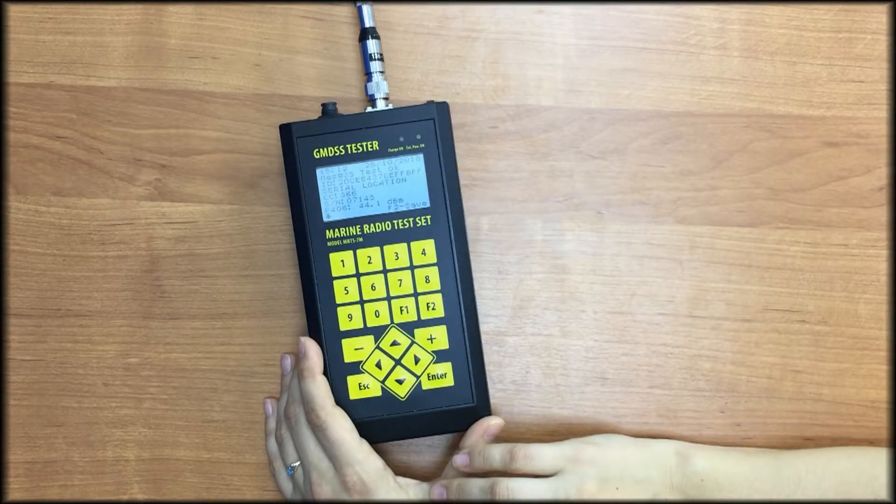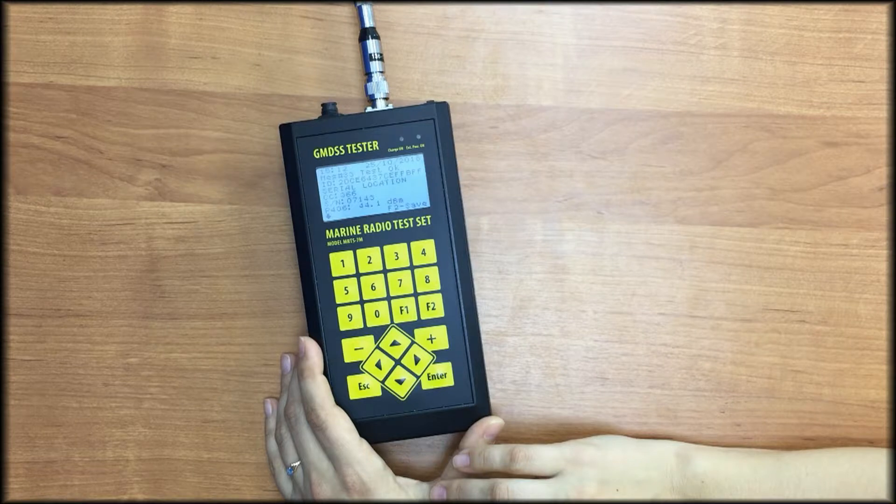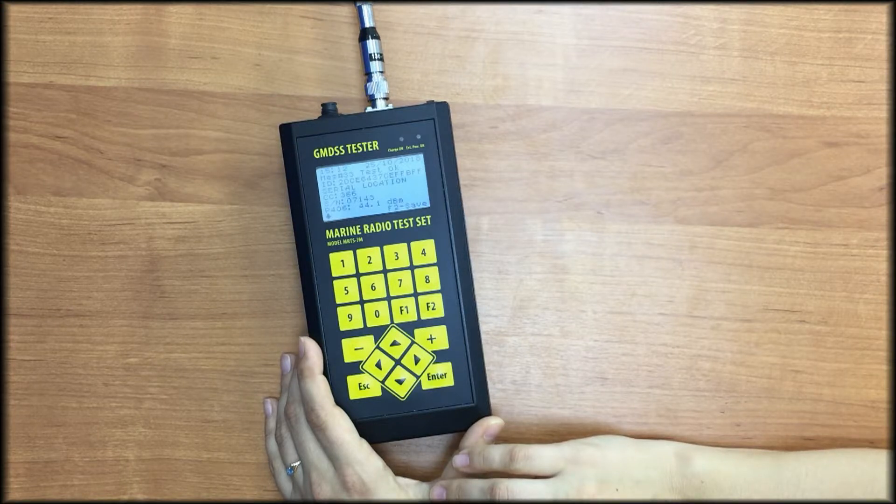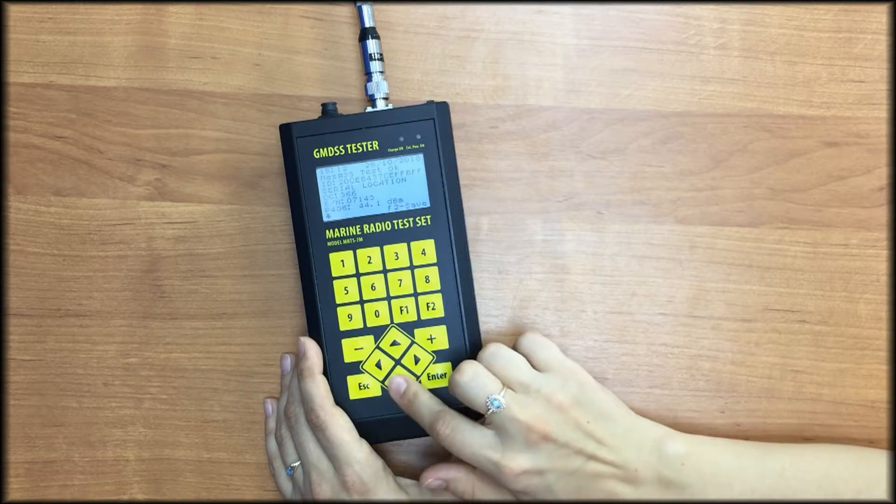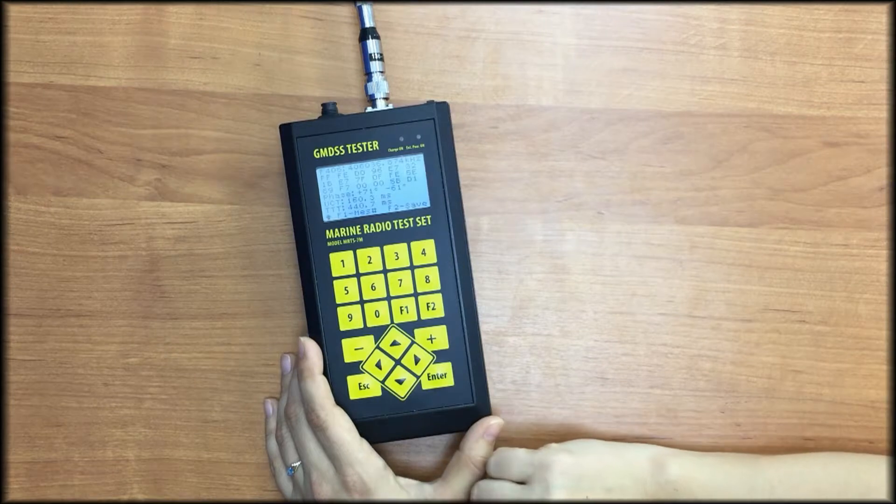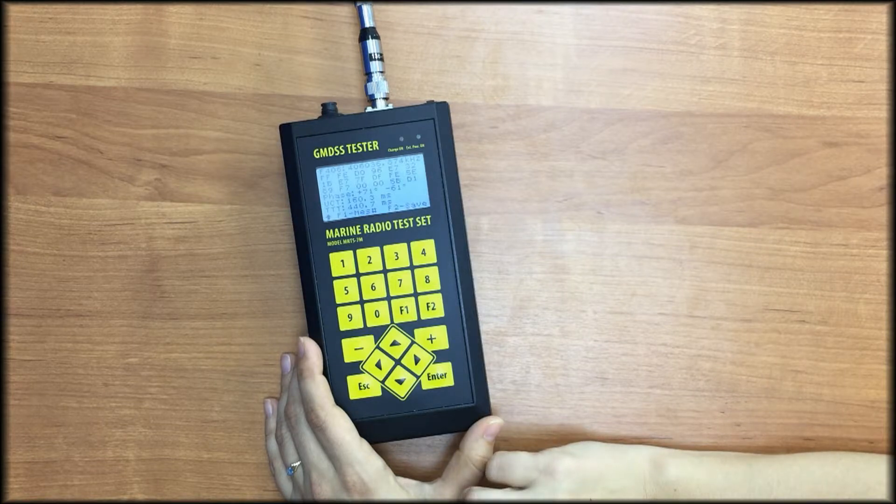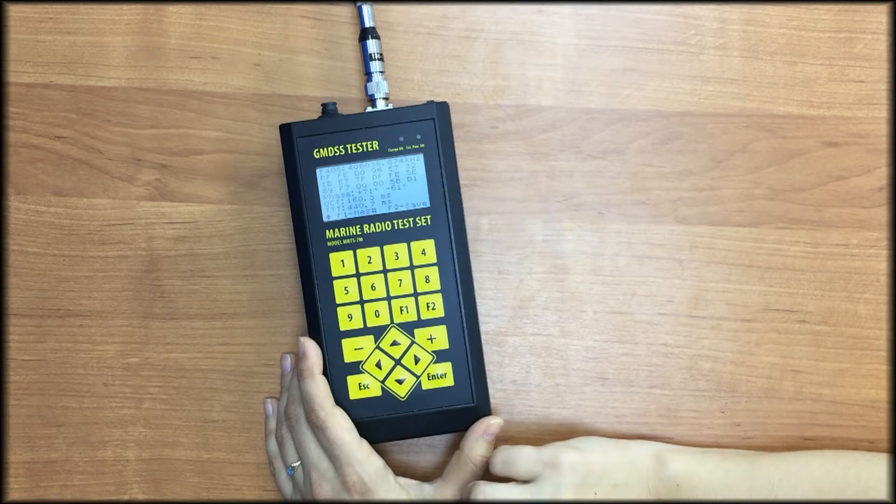We see that MRTS-7M has received and decoded the COSPAS-SARSAT message, beacon hex ID, protocol type, country code, beacon serial number, power level in dBm, frequency in kHz, complete message content in hex format, phase deviation, unmodulated carrier duration, total time of transmission.